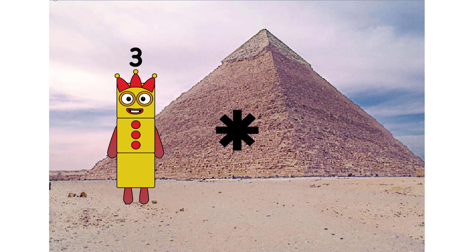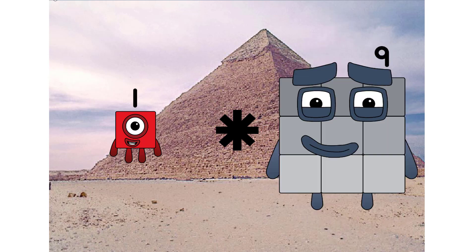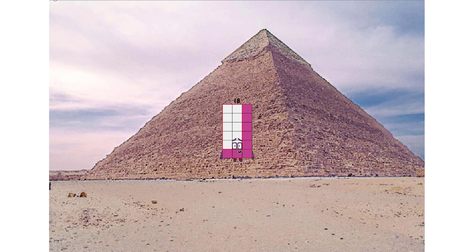1 times 9 equals — you have 10 seconds to answer this question. Let's start: 10, 9, 8, 7, 6, 5, 4, 3, 2, 1. The answer is 18.